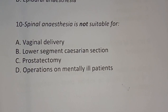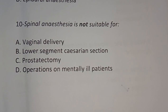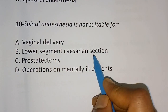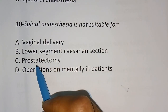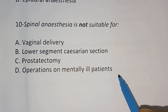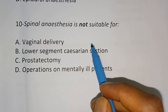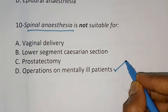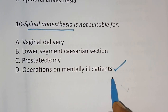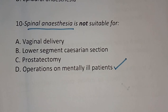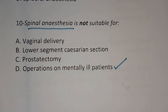Question 10: Spinal anesthesia is not suitable for? Options: (A) vaginal delivery, (B) lower segment cesarean section, (C) prostatectomy, (D) operations on mentally ill patients. The correct answer is option D — operations on mentally ill patients. Thank you for watching this video.